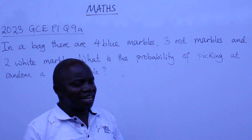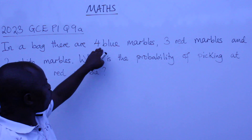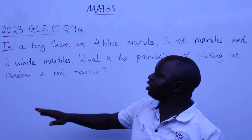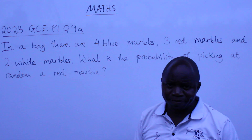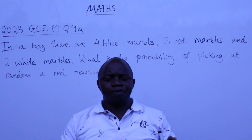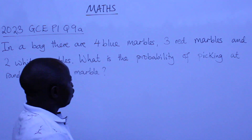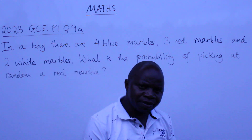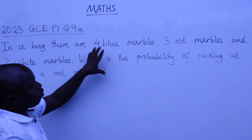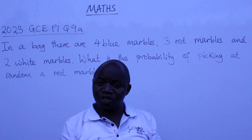So, we are saying in a bag we have got these marbles: four of them are blue, three of them are red and two of them are white. This question, ladies and gentlemen, is coming from a topic called probability. How do you go about it? Well, you need to find what we call the sample space — in this bag, what is the total number of marbles? That is the first thing that you need to know.